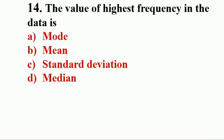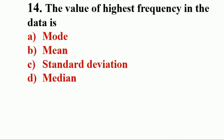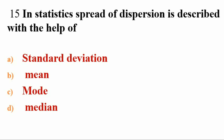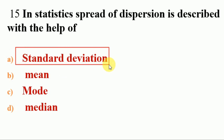Next question: the value of highest frequency in the data is — options: A. mode, B. mean, C. standard deviation, D. median. The answer is A, mode. In statistics, spread or dispersion is described with the help of standard deviation. Deviation of a value from the average or central value is called measures of dispersion, which includes range, mean deviation, standard deviation, and quartile deviation. Range and standard deviation are the most commonly used measures of variability.